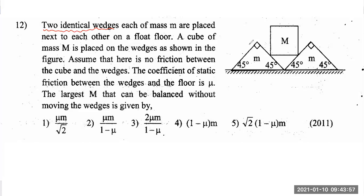Each wedge has mass m and are placed next to each other on a floor. A cube of mass capital M is placed on the wedges as shown in the figure. There is no friction between the cube and the wedges. The coefficient of static friction between the wedges and the floor is μ. Whenever they say 'largest' or 'maximum,' it means a limiting condition — so limiting frictional force is acting on the object.